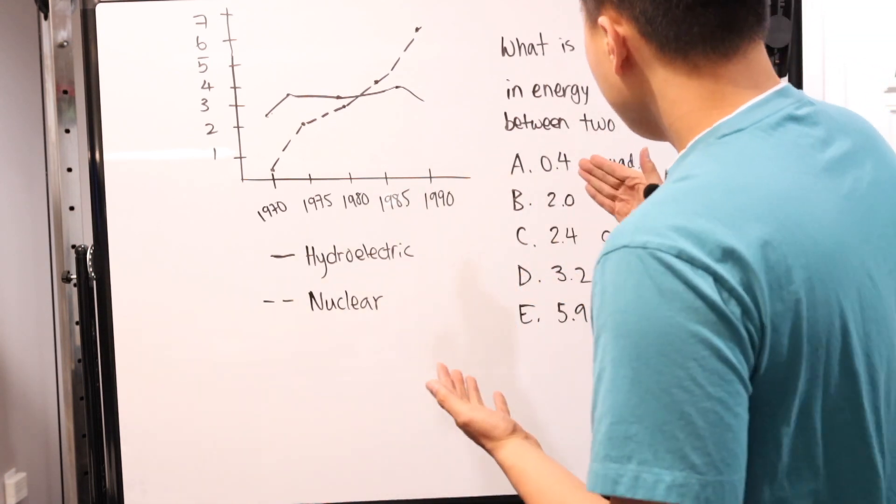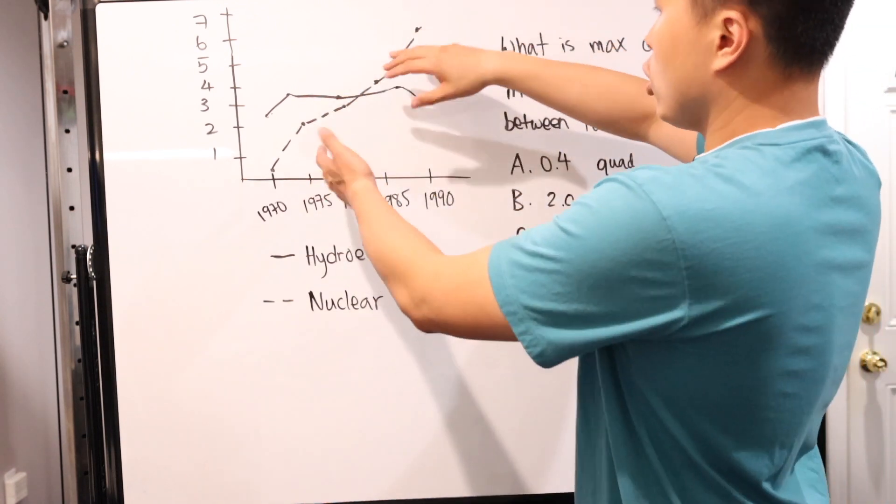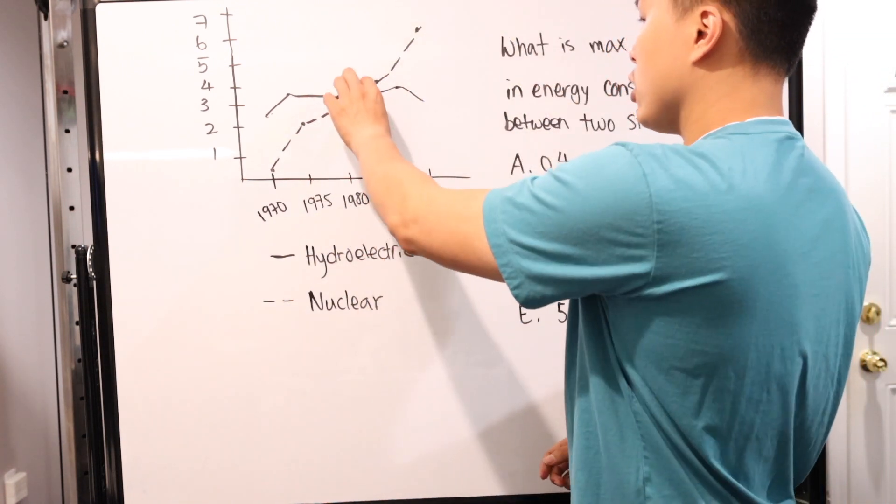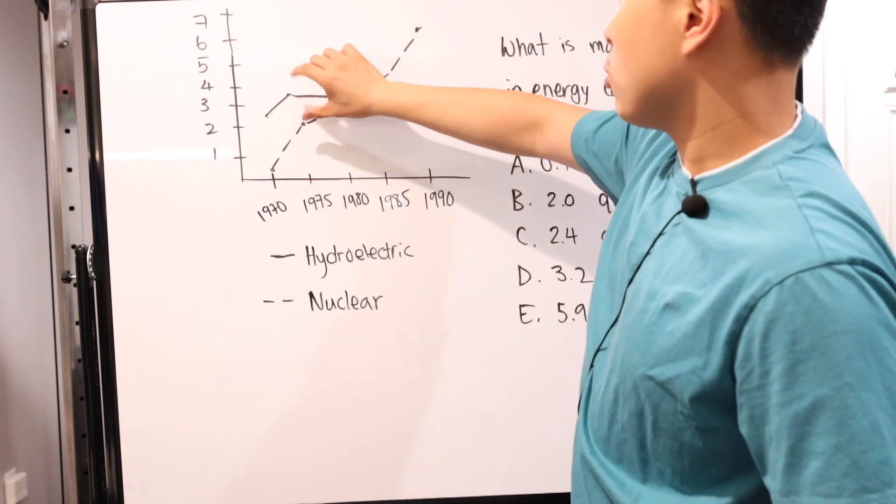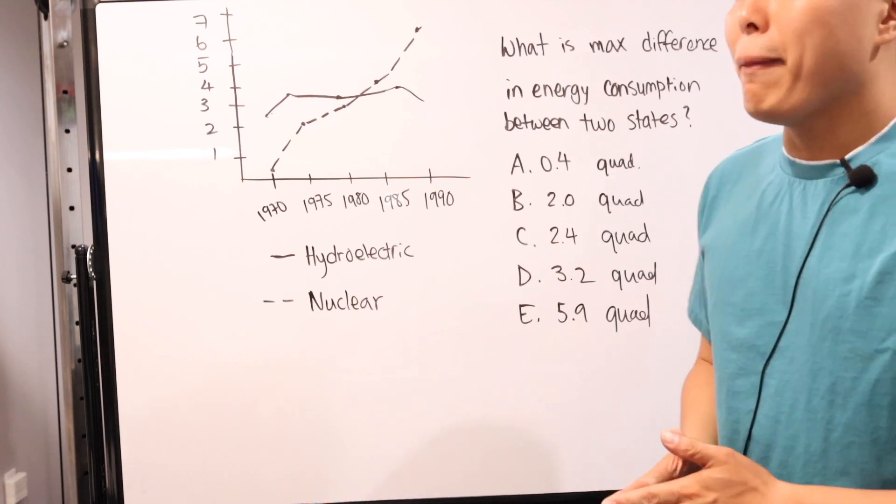And then they give you these basic, I guess you could say, answers that you can choose from. Now, the key word is max difference. There is a lot of difference, some going higher, some going lower. Here's where they intersect. And the difference exacerbates near the end. So in this case, you have to figure out which one is the max.